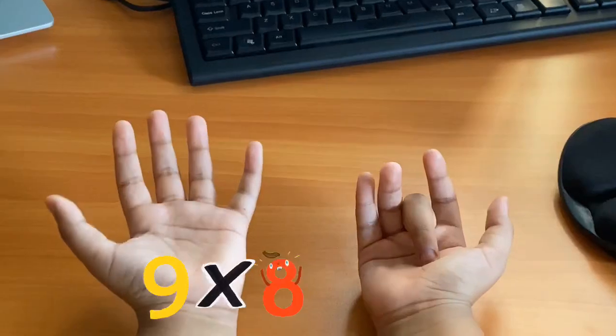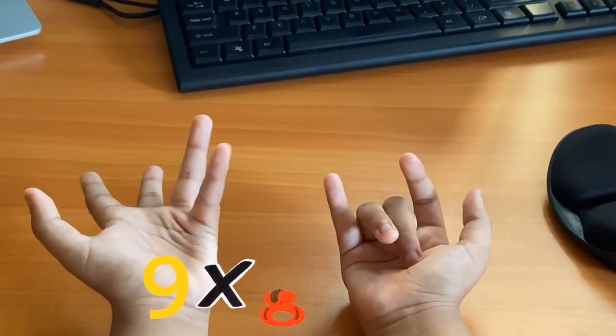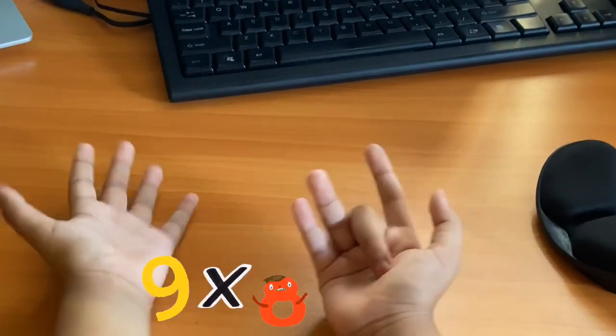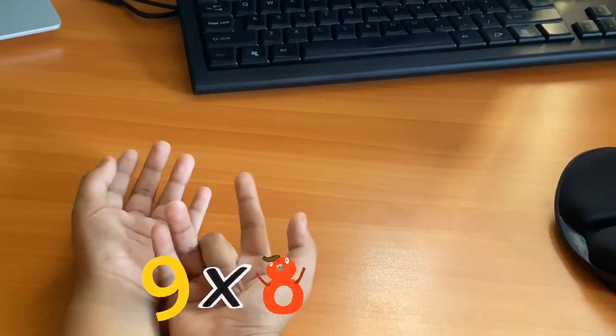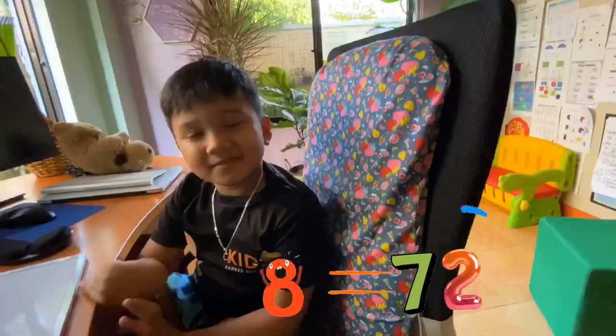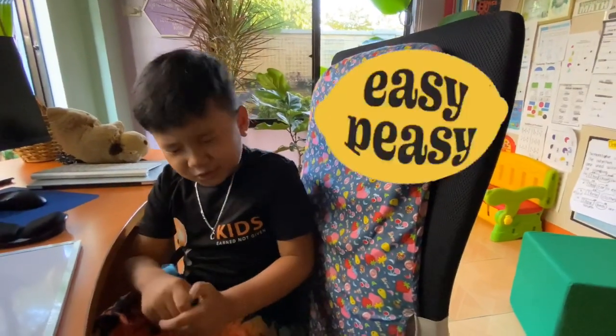So, 1, 2, 3, 4, 5, 6, 7. Here is 1, 2. So, it's 72. See? It's just super easy.